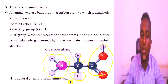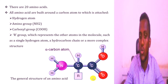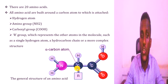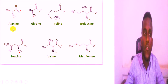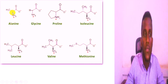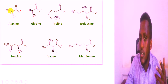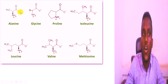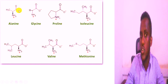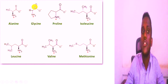This R group may be hydrogen specifically. For example, in the case of glycine, the R group is hydrogen, joined to an amine group (NH2) and a carboxyl group (COOH). That is the structure of glycine, which is the simplest amino acid.